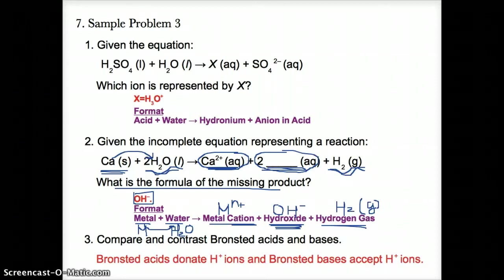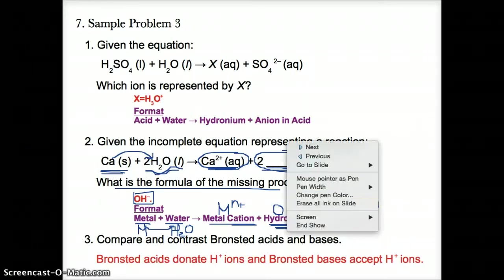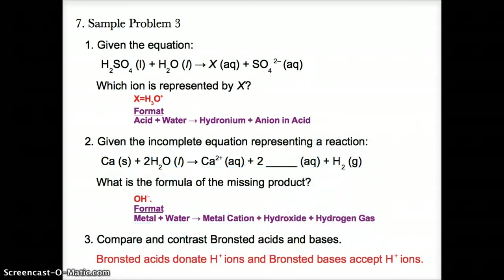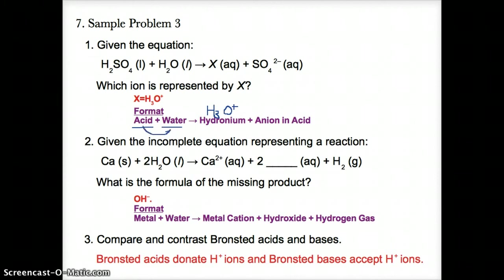Remember these two reactions: acid plus water produces hydronium ions H3O+ because the acid donates its H+ to water. What remains in the acid is the negative ion, written as X to the N-. Also, when a metal reacts with water, the metal knocks out one of water's H's, giving H2 gas as one product.